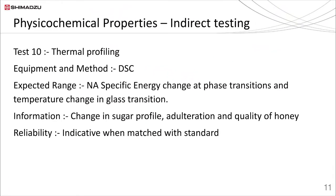One more test that can give good quality information is Differential Scanning Calorimetry (DSC). The DSC can provide valuable information about changes in energy when a phase transfer happens in honey when it is subjected to heat. Being a major constituent, changes in sugar type can reflect in glass transition temperature changes or other thermal property changes, which can help in further identifying the possibility of adulteration.